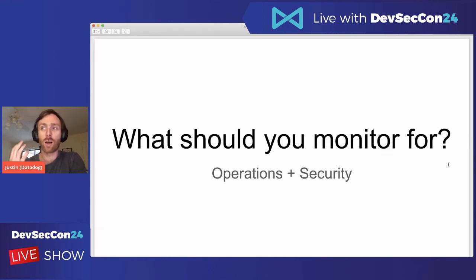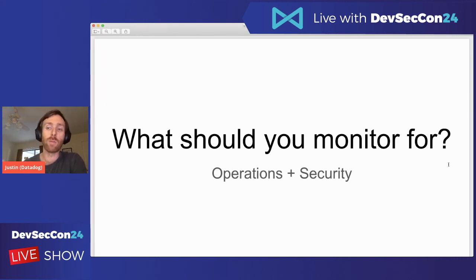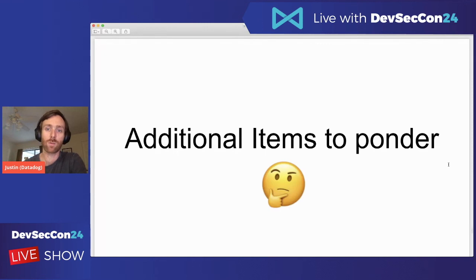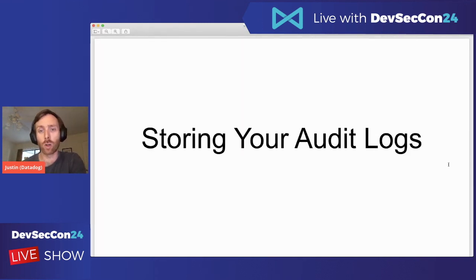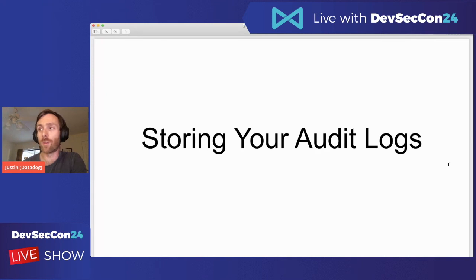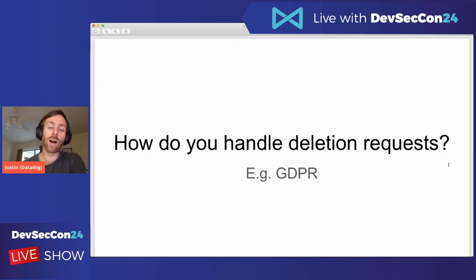What should you monitor for? When figuring out what to log, think about what exactly you're monitoring for. If you're in security, it's not only security use cases — there are also operational use cases to consider. Write down exactly what you want to monitor for and make sure those events make it into the logs. A couple of extra things to ponder: how are you storing your audit logs? Are you storing them on disk and replicating to offline storage like S3? Are you ensuring they are write-once, read-many? And how do you handle deletion requests? If you've logged information in a nice format, it will make it much easier to run a script and delete the content that needs to be removed.